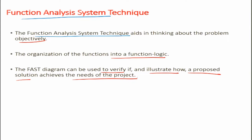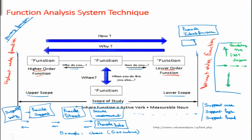In the FAST diagram, we have the highest order function on the left and the lowest order function on the right. It starts from the left and propagates towards the right side. This is the schematic of building the FAST diagram.